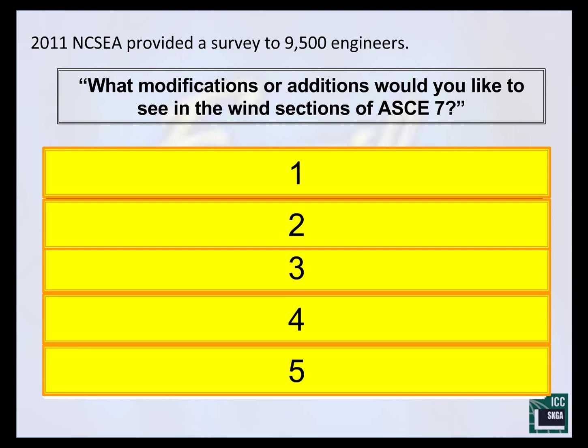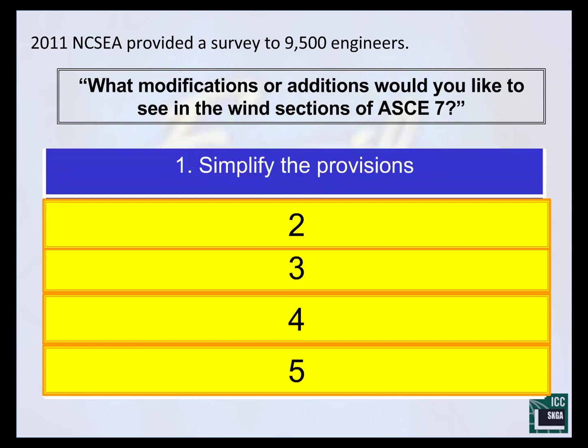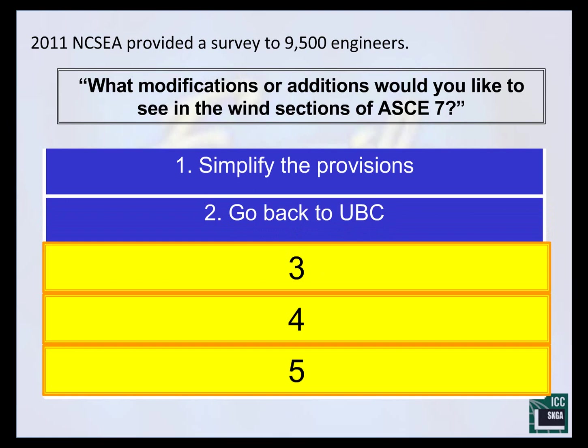I put the top five answers here on the board. The first request was to simplify the provisions — we could do an entire two-hour session on this topic. As a voting member of the ASCE 7-22 Wind Load Committee, I can promise you that is a very strong focus for the next code cycle. My hope is that at the end of this session we have simplified what's already in the provisions and focused on the really key components. The second most popular answer was to go back to UBC. While a lot of old-timers would love to return to UBC-type provisions, that's not the reality. We are working to simplify provisions and make them easier for the practicing engineer, but we are going to live in the IBC/ASCE 7 world.